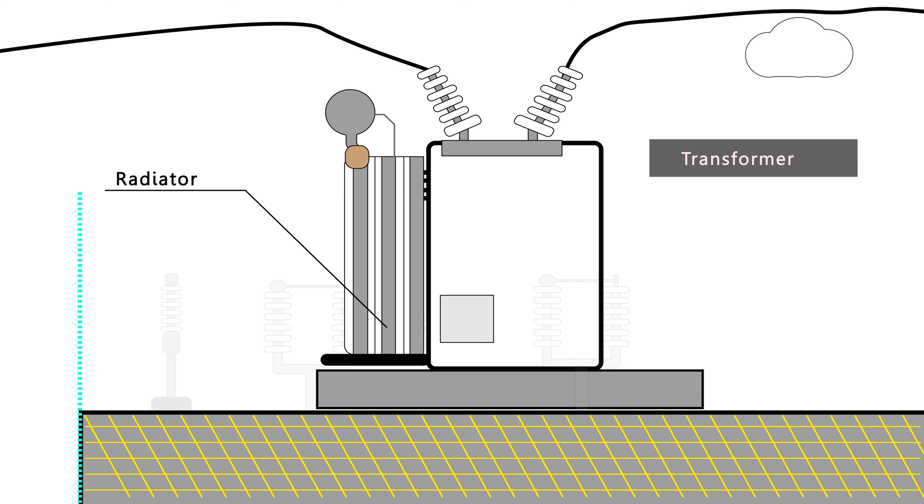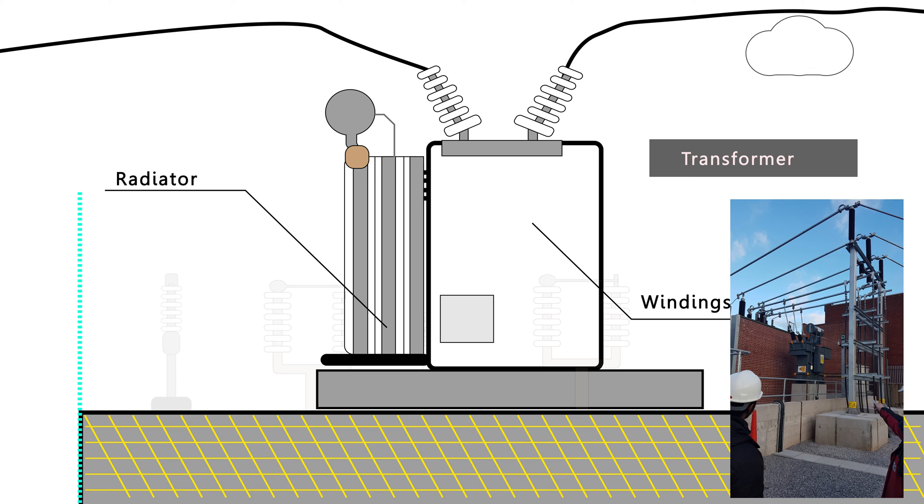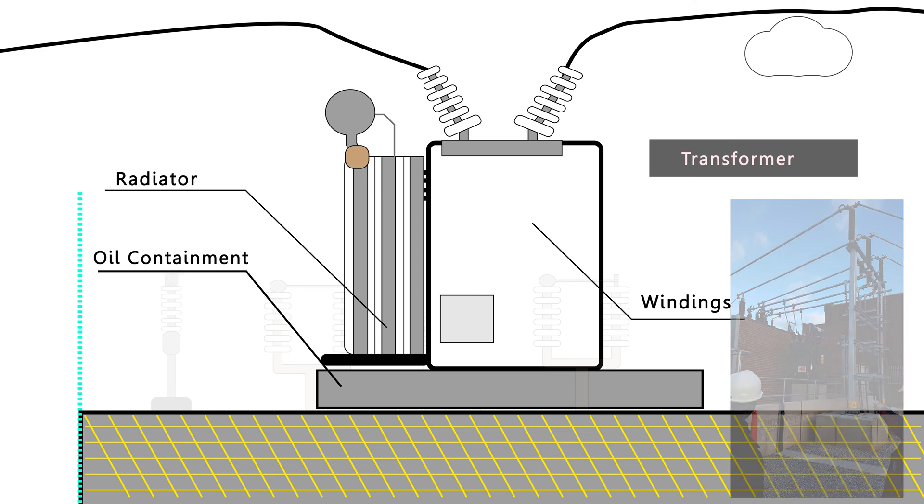Now the main chamber houses the windings. And of course, this is where the electrical role of the transformer is carried out, the stepping up and the stepping down. We also have another noticeable feature, an oil containment measure. Transformers contain lots of oil and if they leak, there has to be a way to contain that oil. So normally an oil containment measure, sometimes these are called bunds, are used to contain any leak of oil.